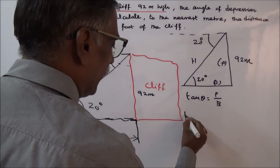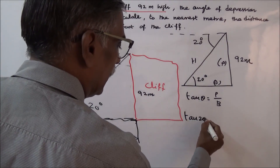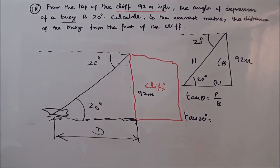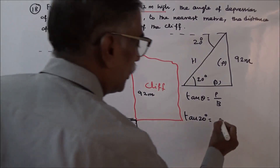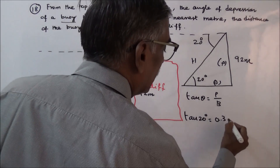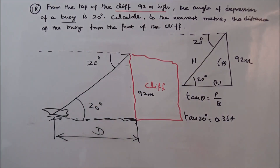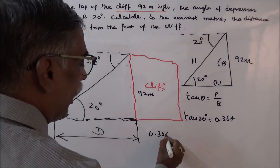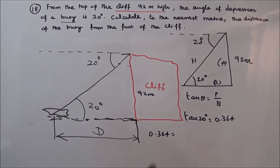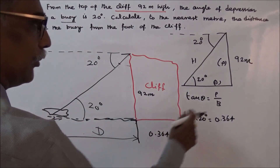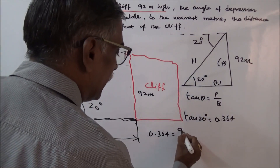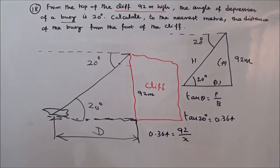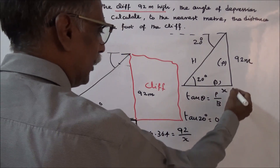Theta is given. Tan 20 degrees — what is tan 20? Tan 20 is 0.364. So 0.364 equals perpendicular by base, that is 92 meters. P is 92 meters, so this is 92 divided by X. Let us say this is X — X is equal to D.